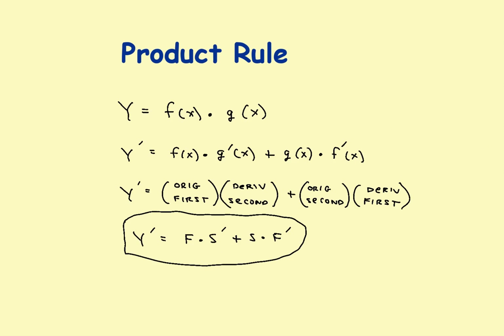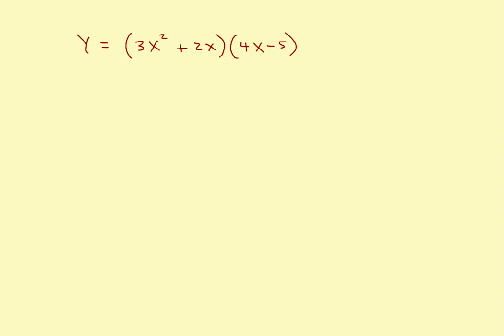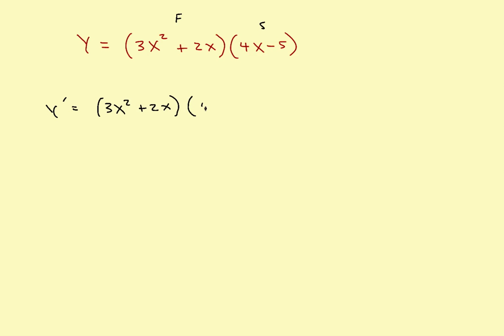Let's take a look at a couple of examples. What we've got here: this is the first function, this is the second function. The rule says as follows — it's very easy to apply. You've got the original first function, so just rewrite the first one: 3x squared plus 2x, times the derivative of the second. The derivative of 4x minus 4 would just be 4.